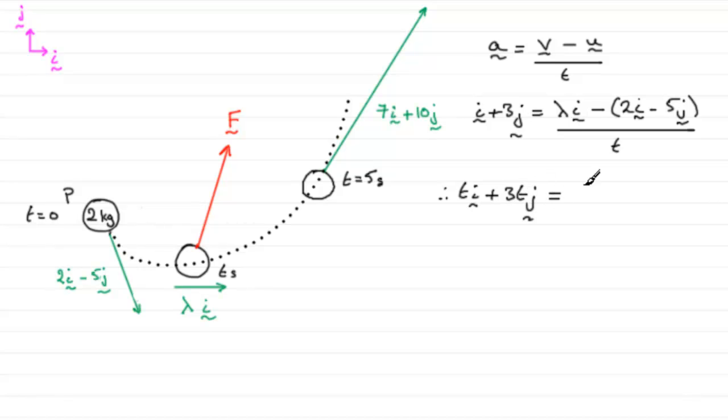And that leaves us with lambda minus 2 in the i direction. So, we can put that in brackets, lambda minus 2 in the i direction. And then as for the j components, we've got minus minus 5j, in other words, plus 5j.